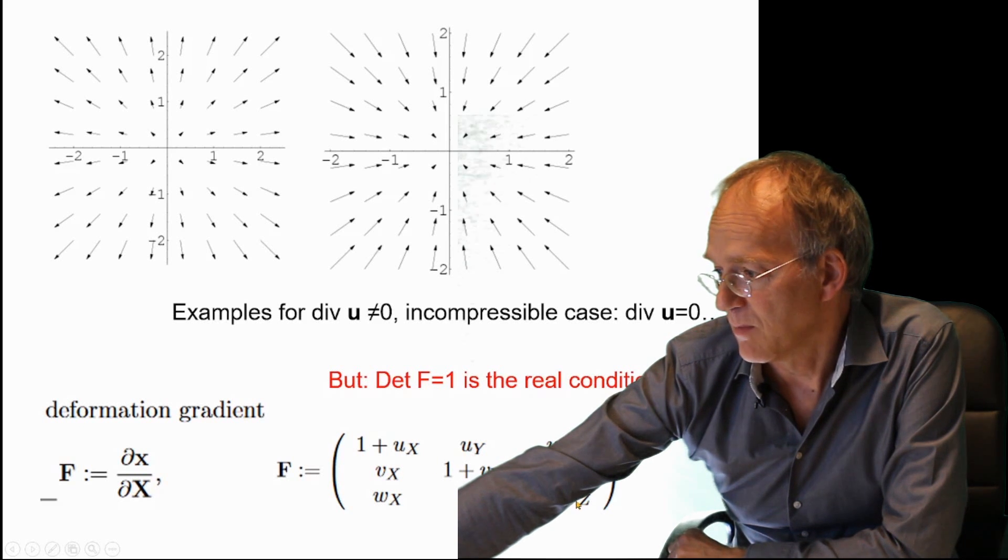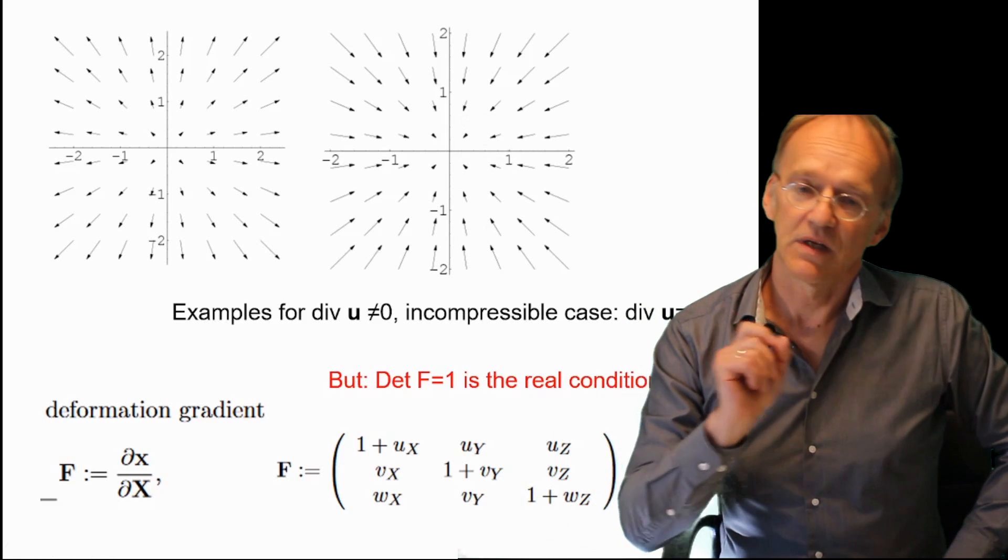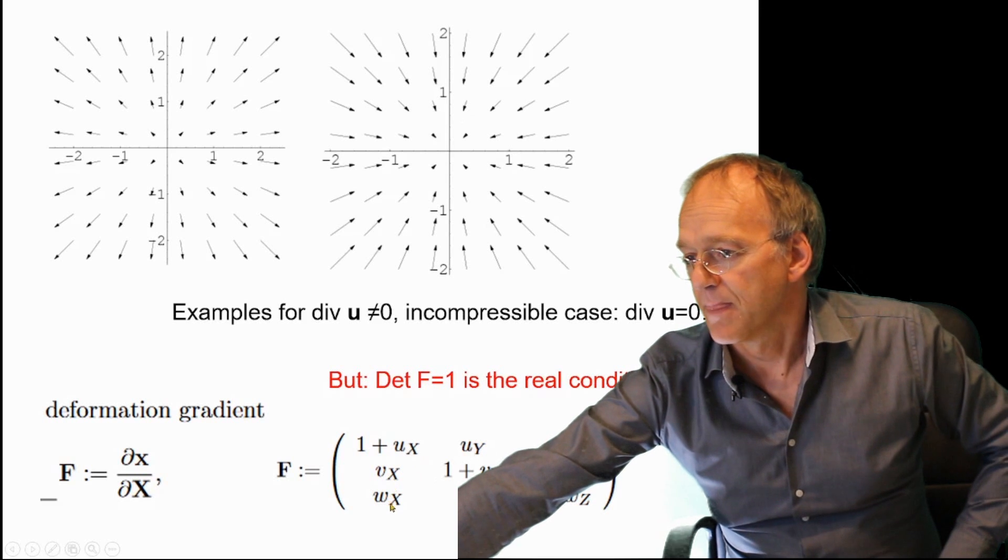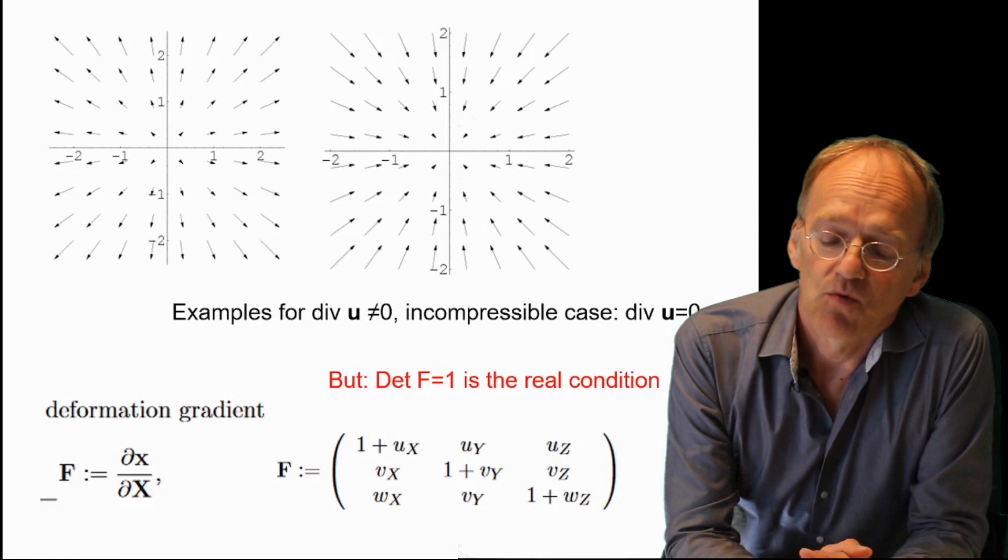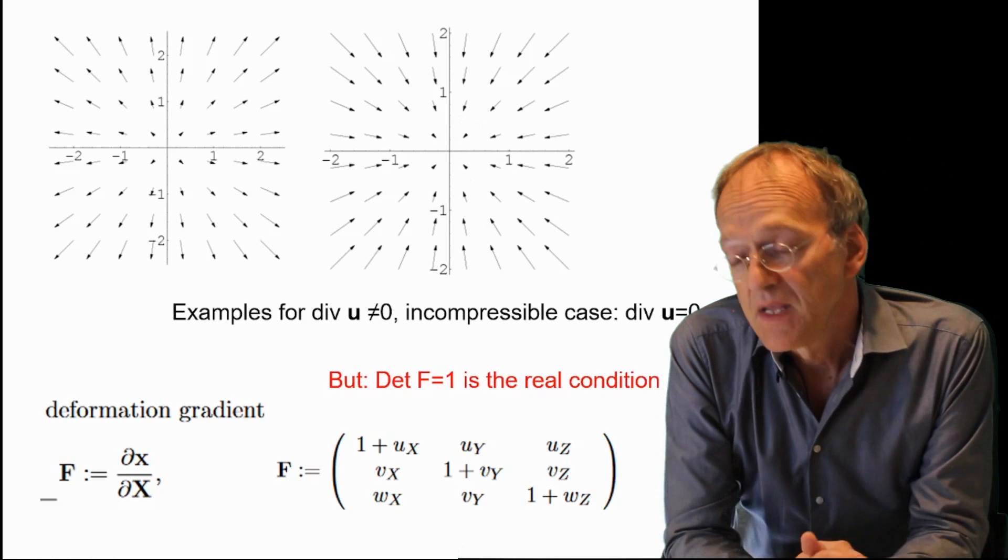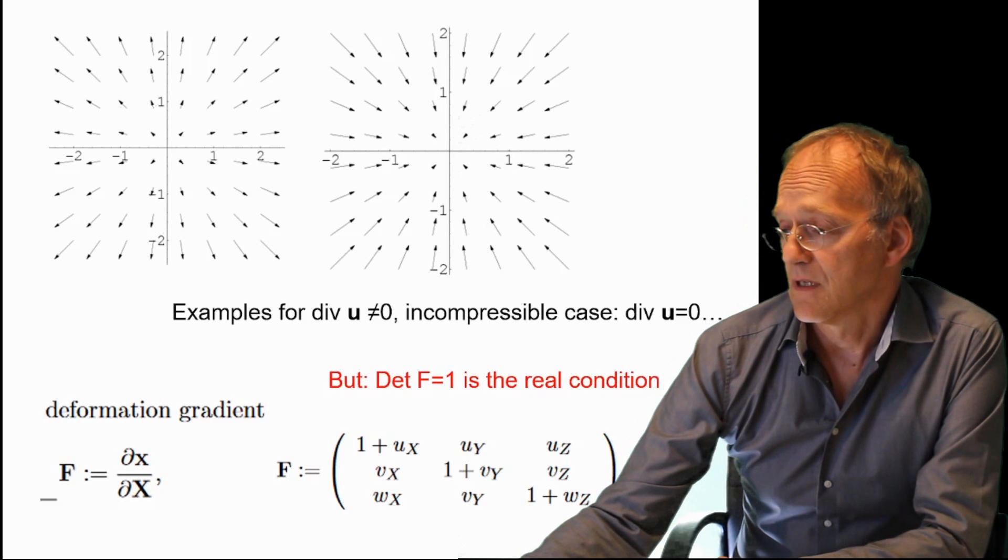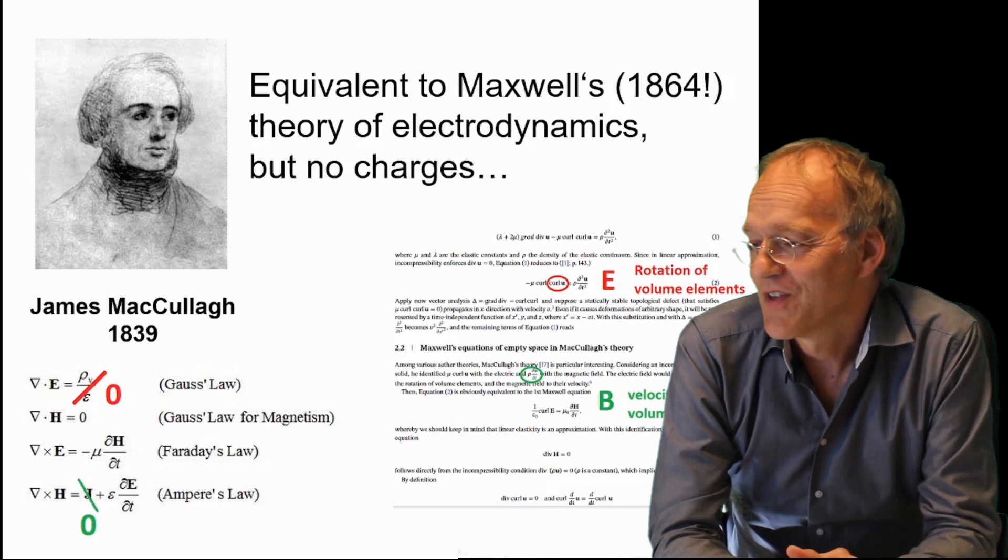And in first approximation, this is equivalent to divergence u, because if you add up ux and vy and wz, then you have the divergence. But in the real non-linear case, you would have to consider the determinant of that deformation gradient, and if this is one, then you have the real incompressible case.